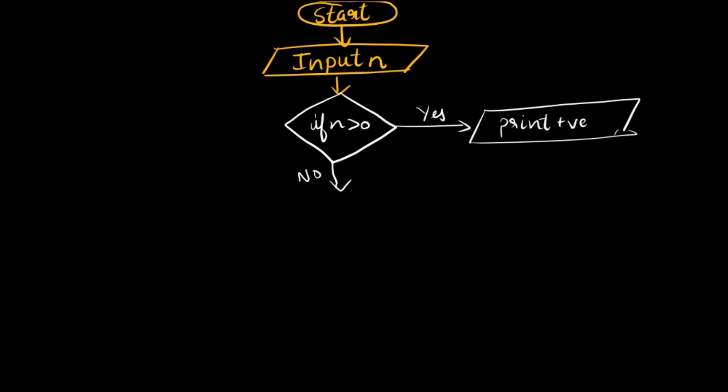If it is no, then go to the next decision box. Negative if, if... sorry, it's else if. Else if n less than zero. If it is yes, else print negative. And if it is no, go to the next step.